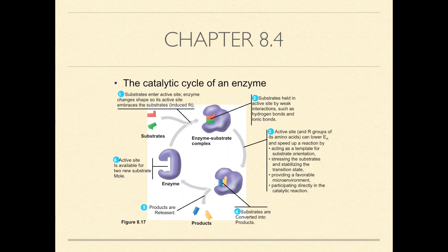The catalytic cycle is the cycle that turns substrates into products and the active site is the enzyme that the substrates get put into to form these products. The catalytic cycle starts with the substrates entering the active site and the enzyme forms the shape of the substrates. The substrates are held in the active site by weak interactions such as hydrogen and ionic bonds. Then the active site lowers the activation energy and speeds up the reaction. Finally, the substrates are converted into products and released.